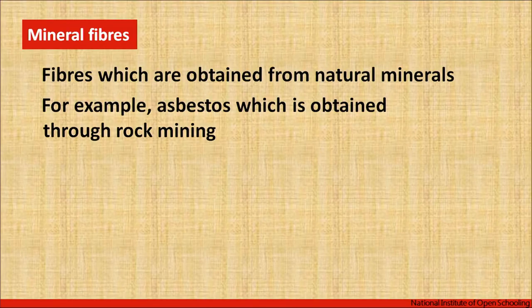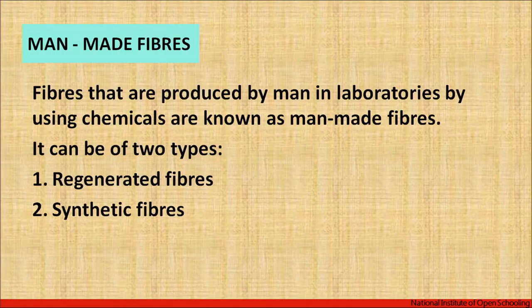Mineral fibers are obtained from natural minerals — asbestos from rock mining is the example. In terms of seasonal use, cellulosic fibers like cotton and linen are more breathable, cool easily, and dry up fast, making them suitable for summer. Wool fibers conserve heat and make the person feel warm, so wool and silk are usually used for the winter season.